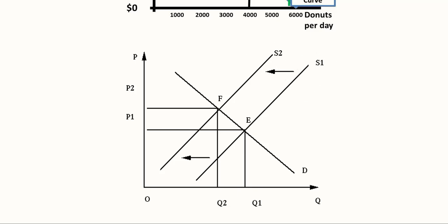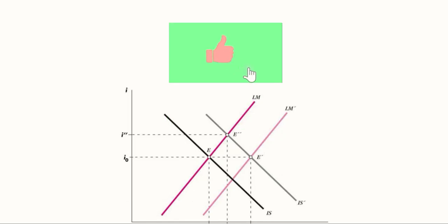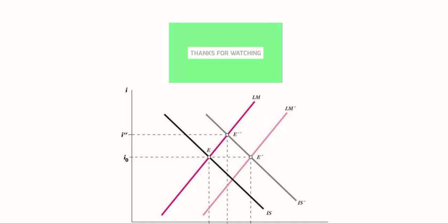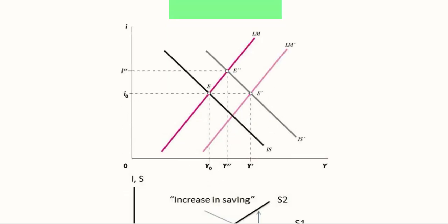Similarly, if the supply shrinks — for example from S1 to S2 — the initial equilibrium will convert into a new equilibrium with a different output and price. For another example from macroeconomic analysis, we have the LM curve and the IS curve — the liquidity for money curve and the investment savings curve. Their intersection gives us the equilibrium level of national income and the equilibrium interest rate.